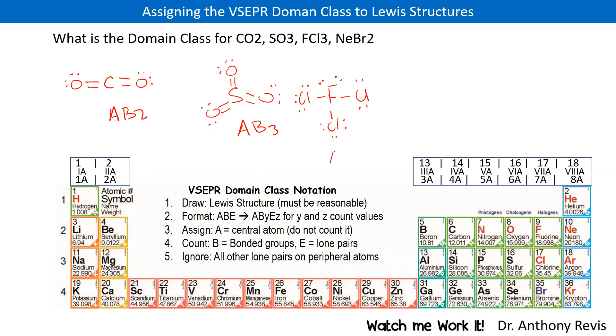So this is going to be an AB3 groups around it. These are all B groups. And I have an E and an E for an E2. Simply count what's around it, but you first must know how to draw the Lewis structure.